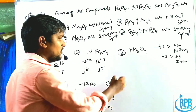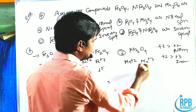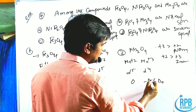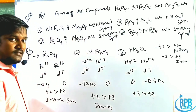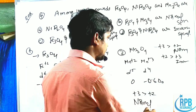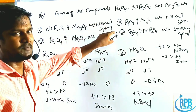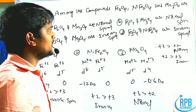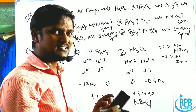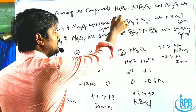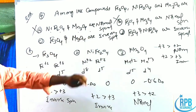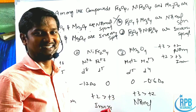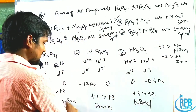Mn₃O₄ contains Mn²⁺ (d⁵, CFSE = 0) and Mn³⁺ (d⁴, CFSE = 0.6 ΔO). Since B³⁺ CFSE > A²⁺ CFSE, Mn₃O₄ is a normal spinal — different from the first two. Checking the options: option D states Fe₃O₄ and NiFe₂O₄ are inverse spinels — that is correct, so option D is our answer.